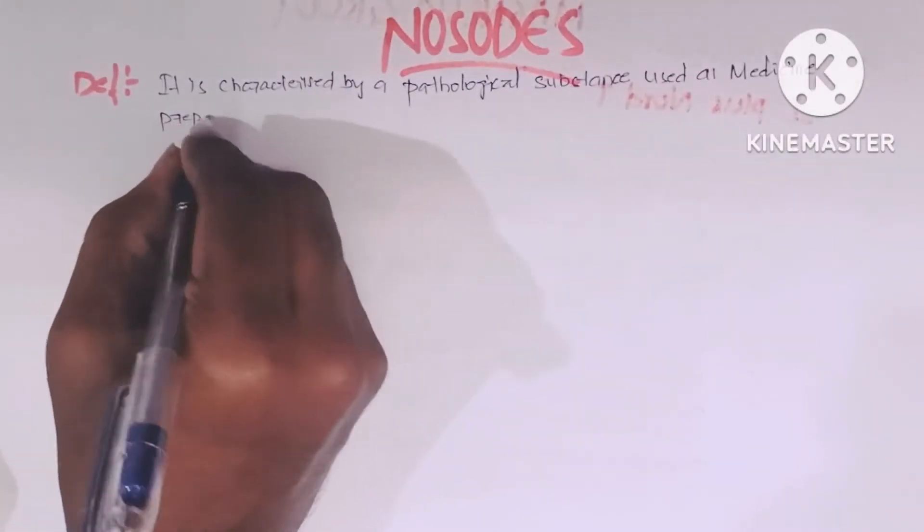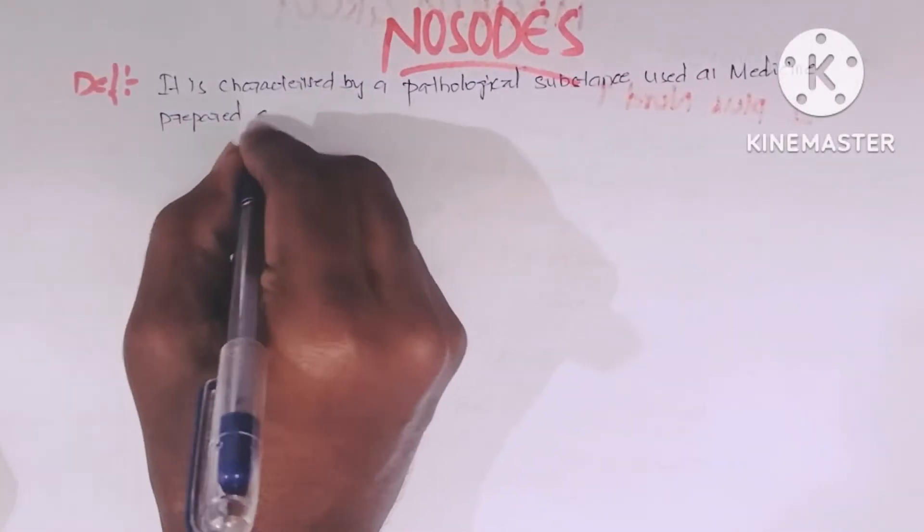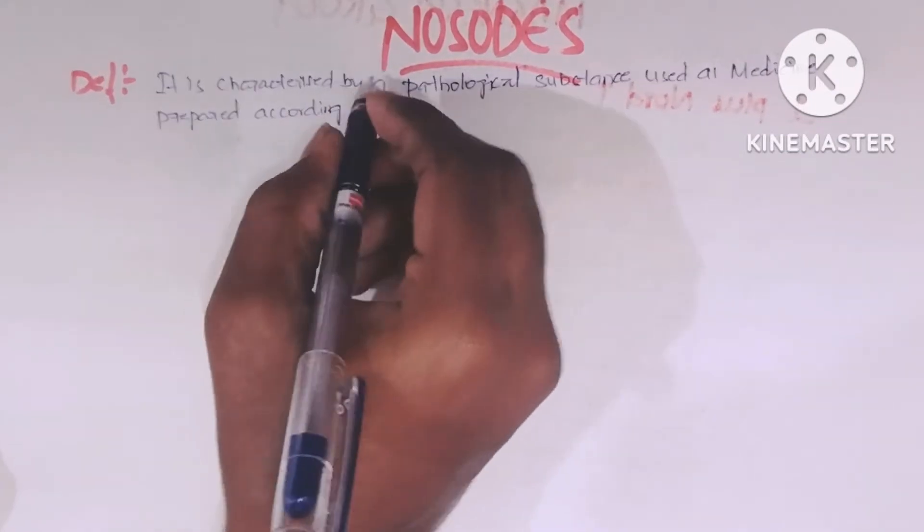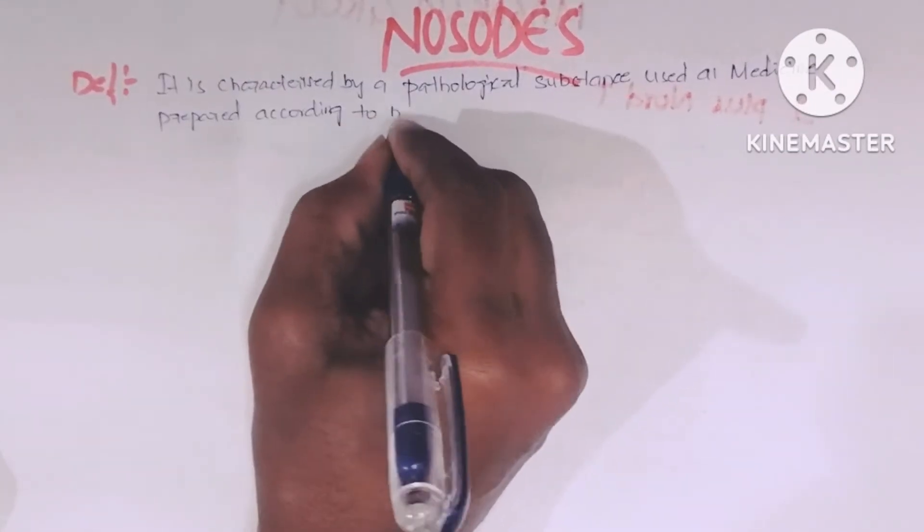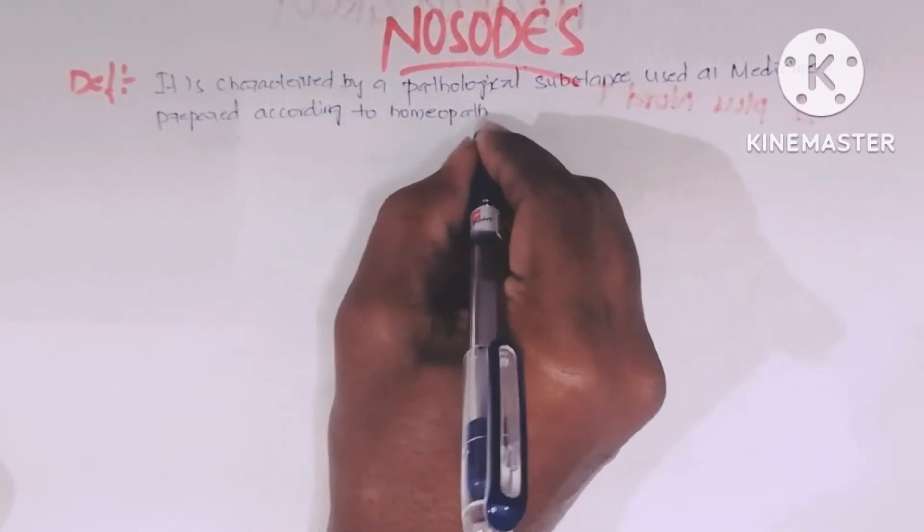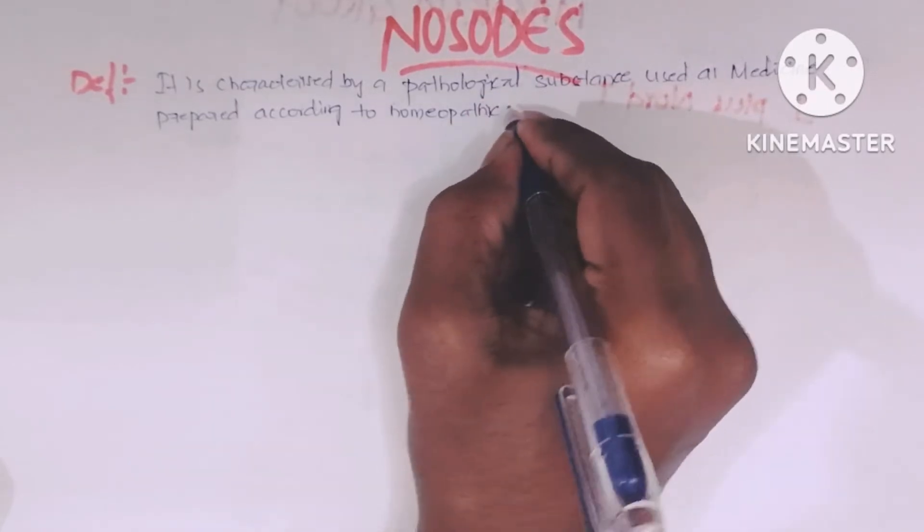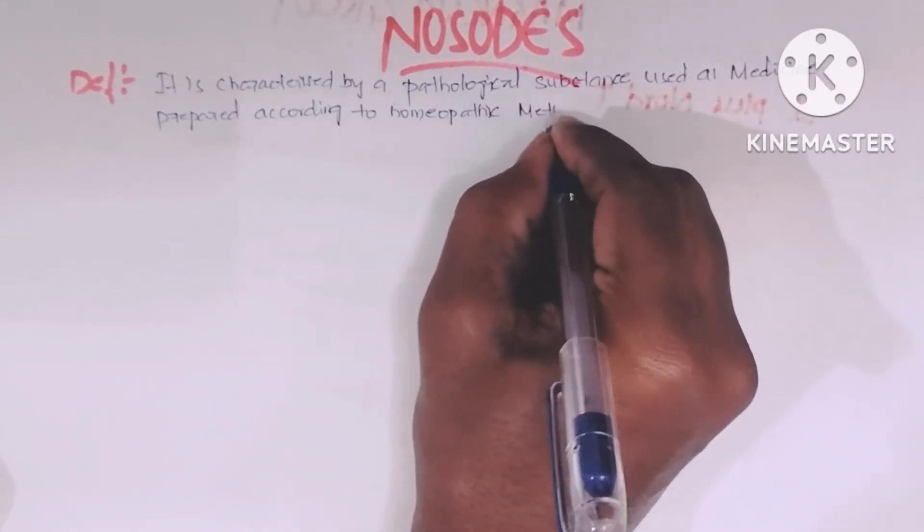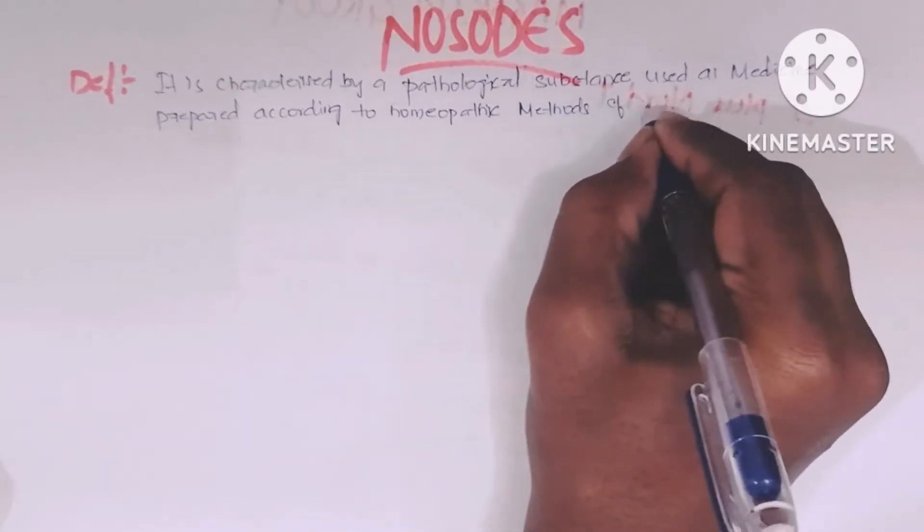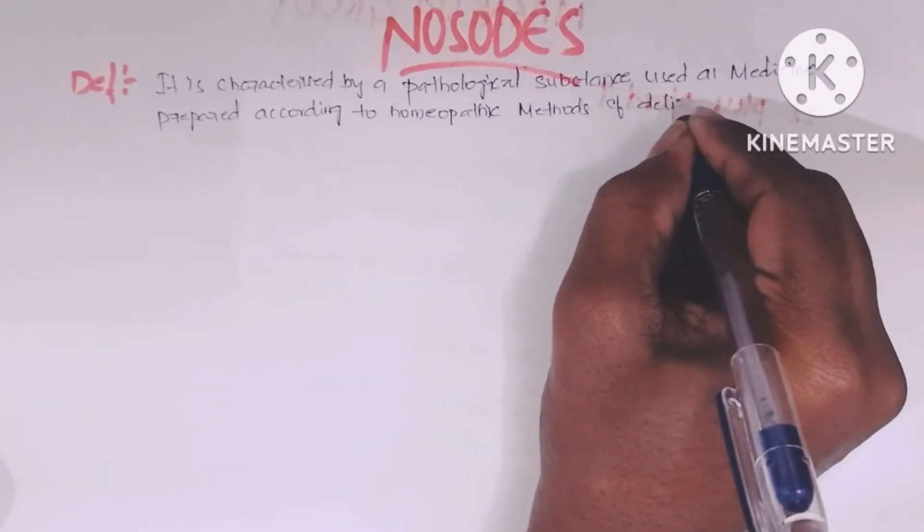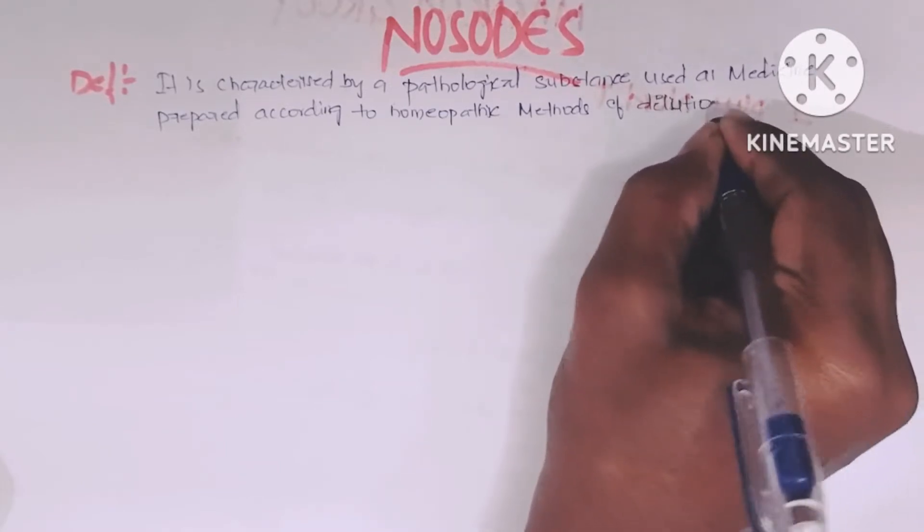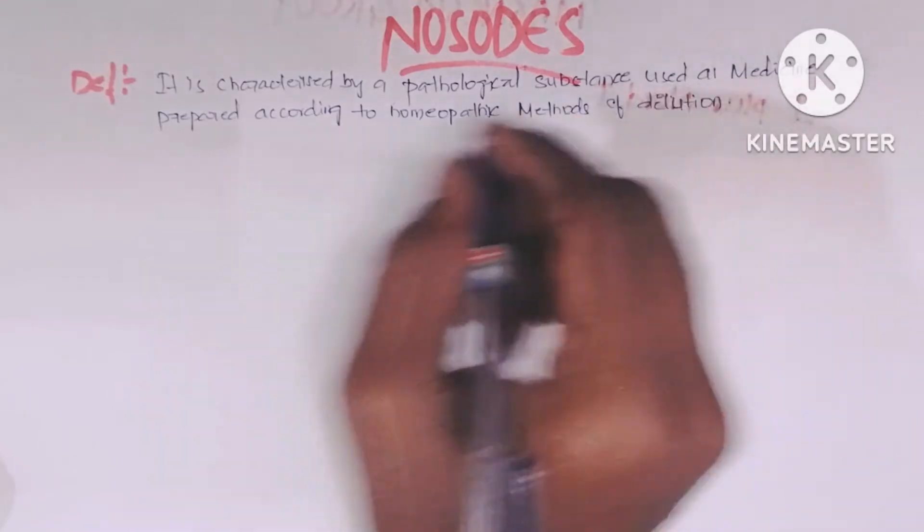It means nosodes are prepared from an unhealthy substance. They are characterized by pathological substances used as medicine, prepared according to homeopathic methods of dilution. When you think about nosodes, Herring should come to mind because he performed the first proving of Psorinum.